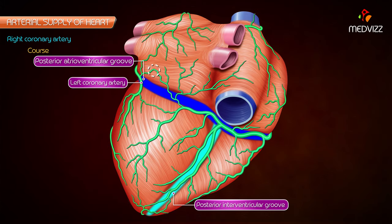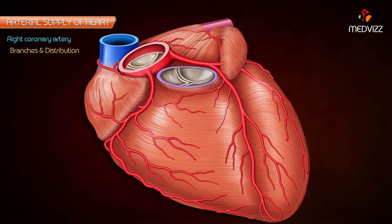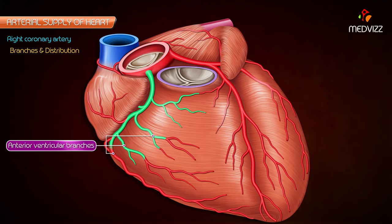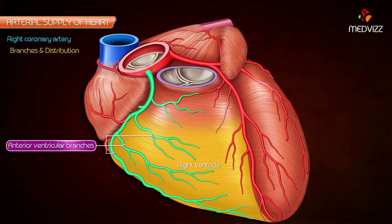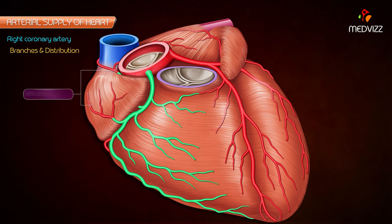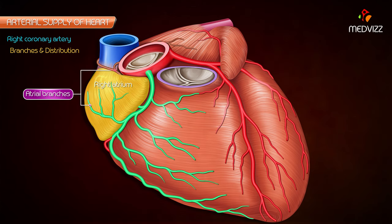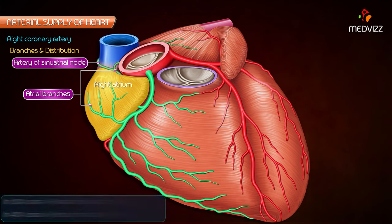Branches and distribution of the right coronary artery: the right conus artery supplies the anterior surface of the pulmonary conus. Anterior ventricular branches — two or three in number — supply the anterior surface of the right ventricle. The marginal branch is the largest and runs along the lower margin of the sternocostal surface to reach the apex. Atrial branches supply the atria; one of these, the artery of the sinoatrial node, supplies the SA node in 60 percent of cases.